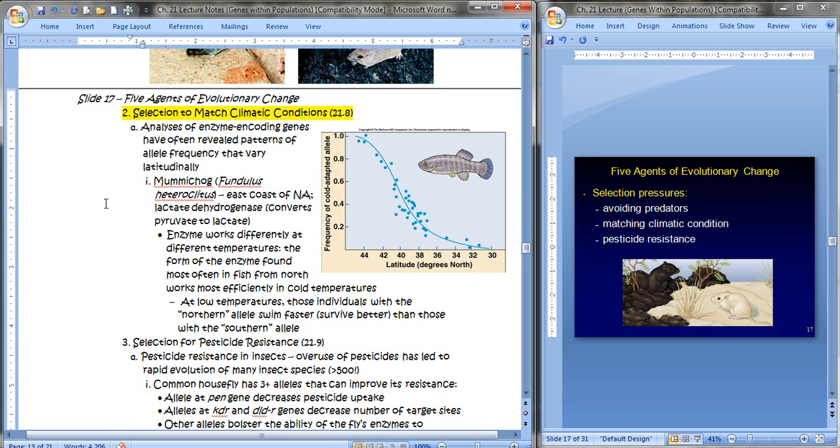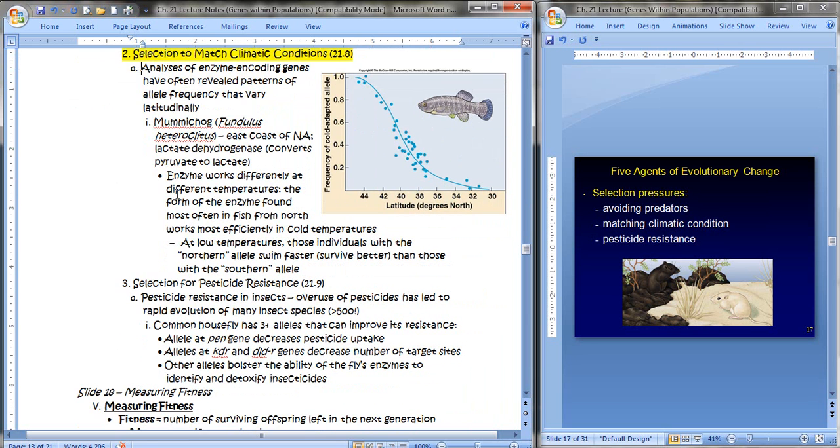And of course, that's going to be part of their cellular respiration and basically just helping them get energy. Remember the spit lab and temperatures and how that can affect enzymes and how well they work? Well, their enzymes work differently at different temperatures. The form of the enzyme that's found most often in the fish from the north works most efficiently at cold temperatures. That's probably not surprising. At low temperatures, those individuals with the northern allele swim faster and survive better than those with the southern allele. That's because they have a better conversion rate of pyruvate to lactate. Therefore, they're getting more energy. And this graph just elucidates that right here.